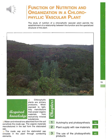This information will be discussed in detail through this part of the book, divided into three different chapters. Chapter 1 talks about autotrophy and photosynthesis, Chapter 2 deals with plant supply with raw materials, and Chapter 3 talks about the use of photosynthetic products.